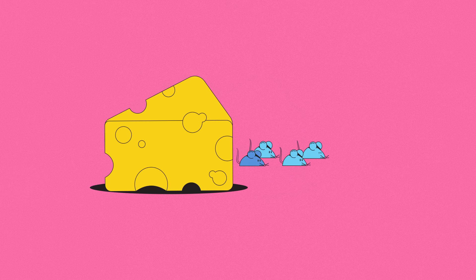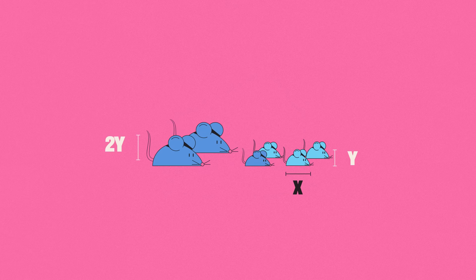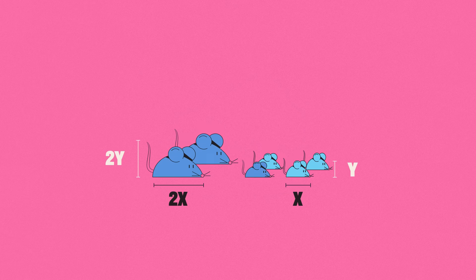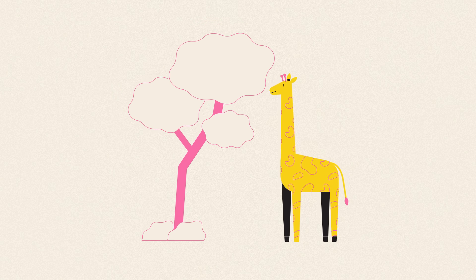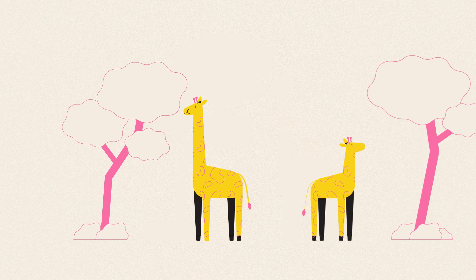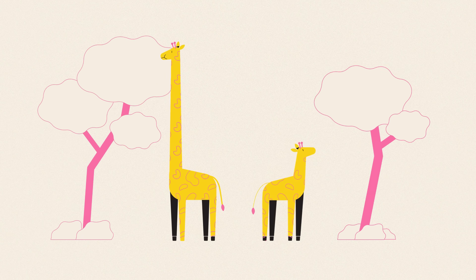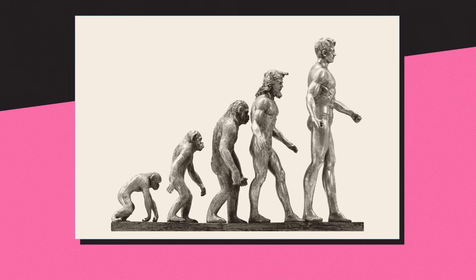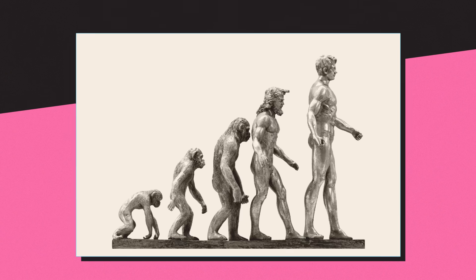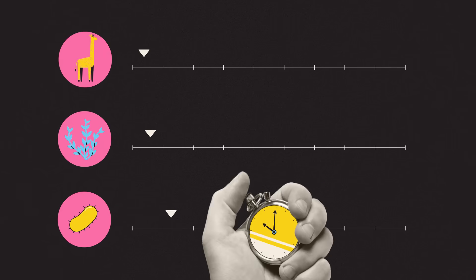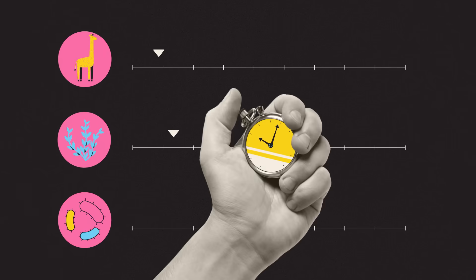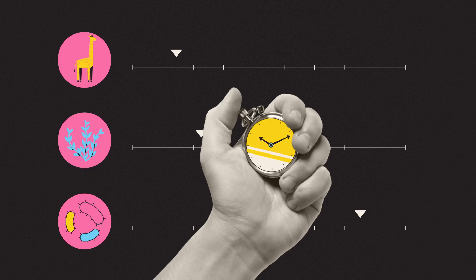When they do, tiny variations sometimes creep into their DNA, altering their size, for example, or their ability to resist antibiotics. And if these new traits provide a survival advantage, they'll be passed on and gradually amplified. This genetic arms race is a normal part of evolution. But while for plants and animals the process takes millennia, for bacteria, it takes minutes, making them a pretty formidable foe at the best of times.